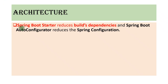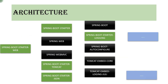Spring Boot starters reduce build dependencies, and Spring Boot auto-configurator reduces the Spring configuration. In the previous video, I explained that if you're going to create a typical Spring application without Spring Boot, you need to add many dependencies manually and create instances of those and include them into the context so they can be included into the container. But with Spring Boot, it makes life easy by combining those dependencies.